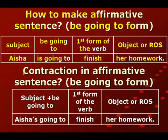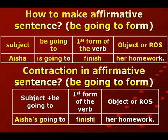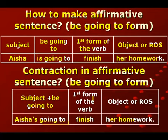الحين نتغير نفس الجملة إلى جملة مختصرة اللي نسمي contraction في affirmative sentence - يعني اختصار في جملة ثابتة في be going to form. فالجملة المختصرة بتكون: Aysha's going to finish her homework. جمعنا subject مع be - يعني جمعنا عيشة وis مع بعض فأصبحت كلمة وحدة: Aysha's، وباقي الجملة نفس الشي.